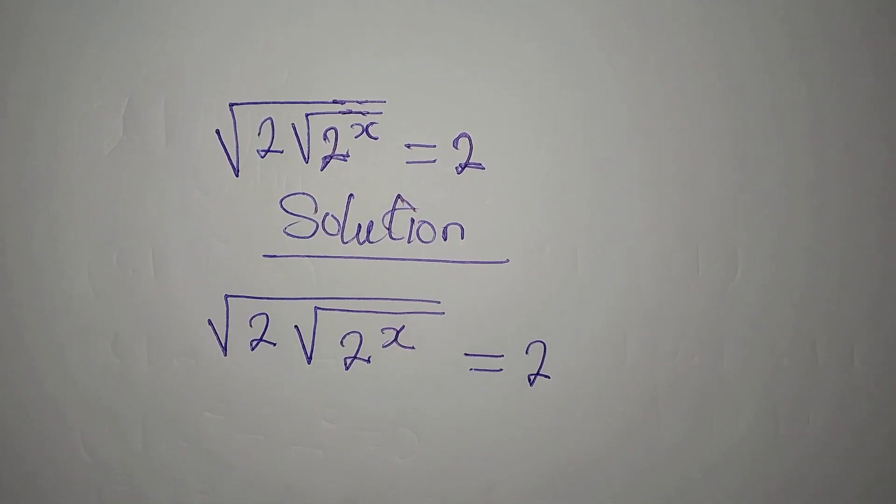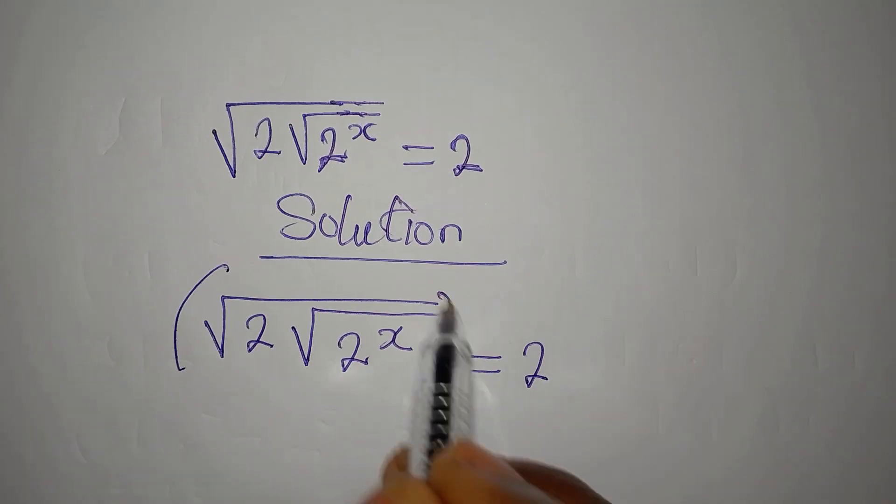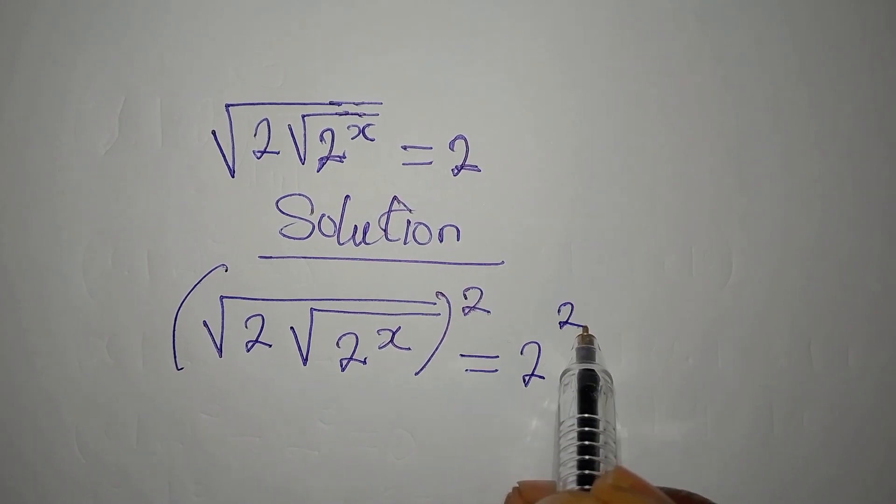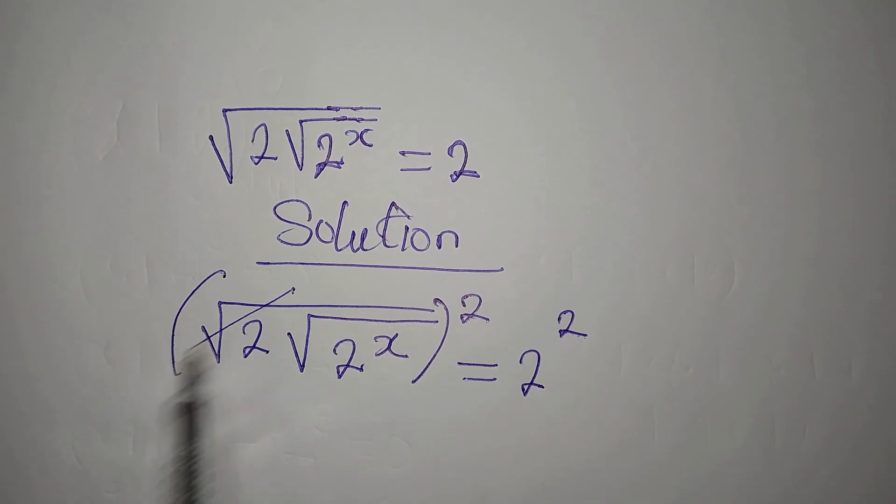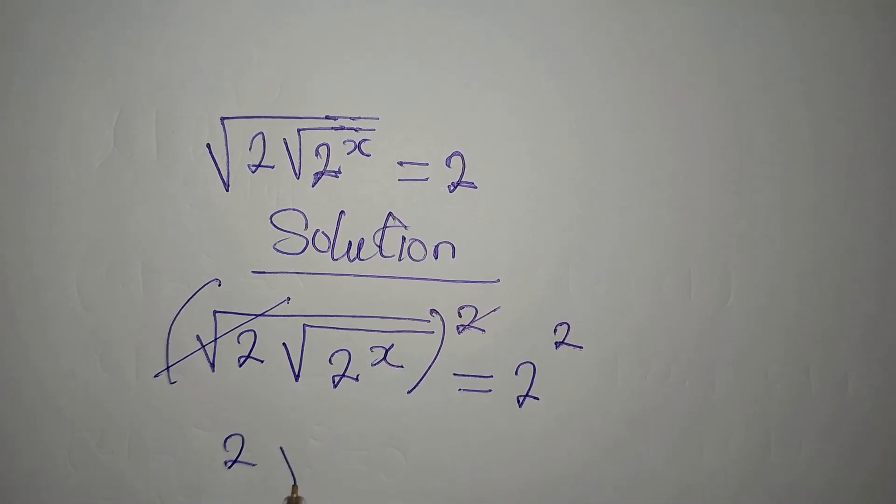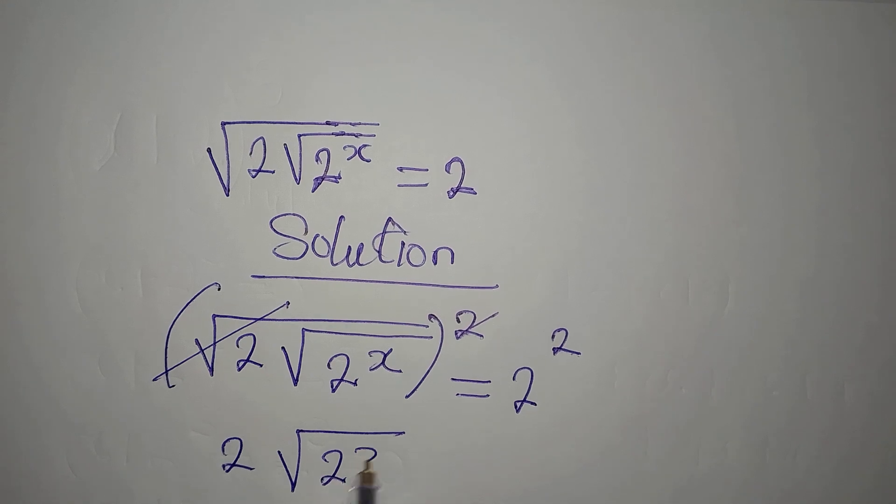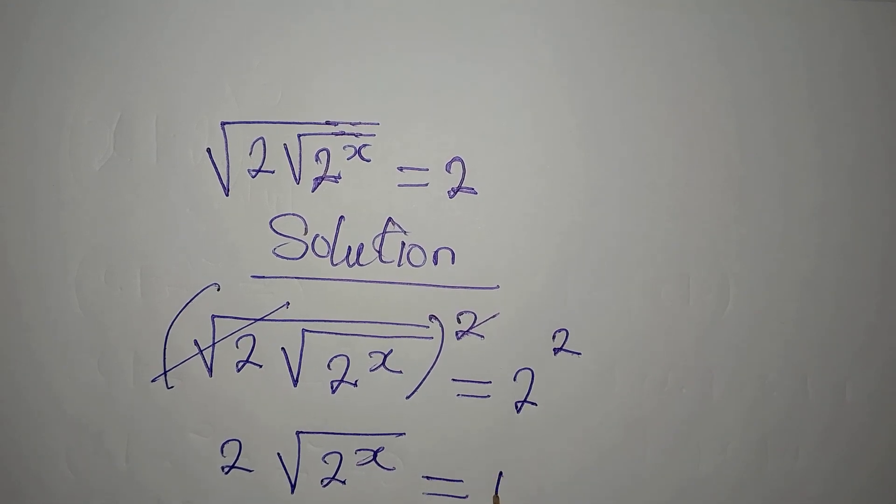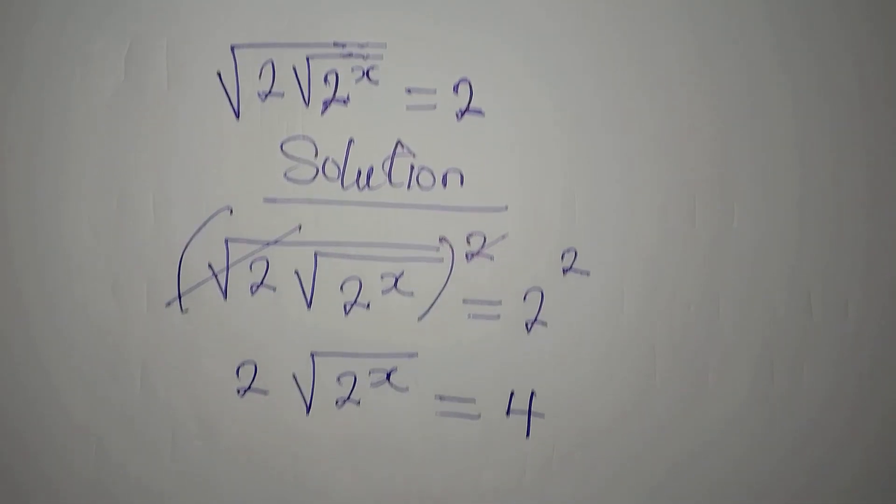Now what do you think will be the first step? To square this so that we can square the other side. So this will go here, then from here we have 2 square root of 2 to the power of x equals 4. 2 squared is 4.